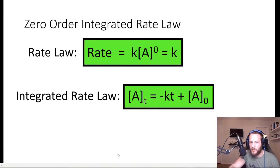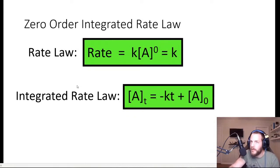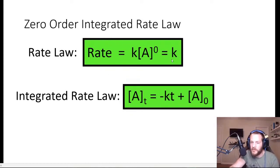So if we're talking about zero order reactions — we're going to talk about each reaction order, zero, first, and second, individually — the rate law for a zero order reaction, if you recall, is rate equals the rate constant times the concentration of the reactant to the zero power. Anything to the zero power is simply one, so this equation simplifies to rate equals just the rate constant. That means the reaction rate is independent of concentration.